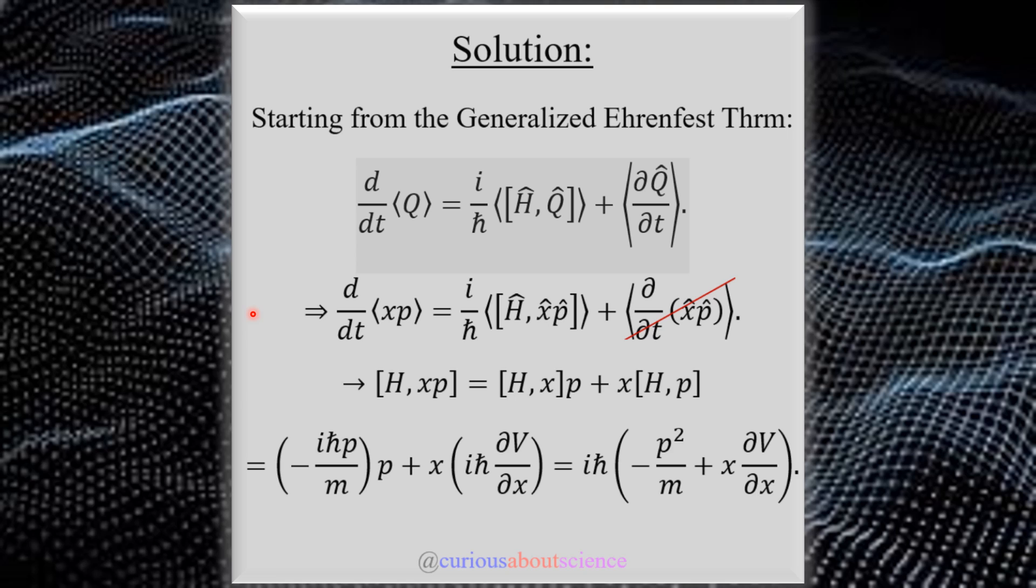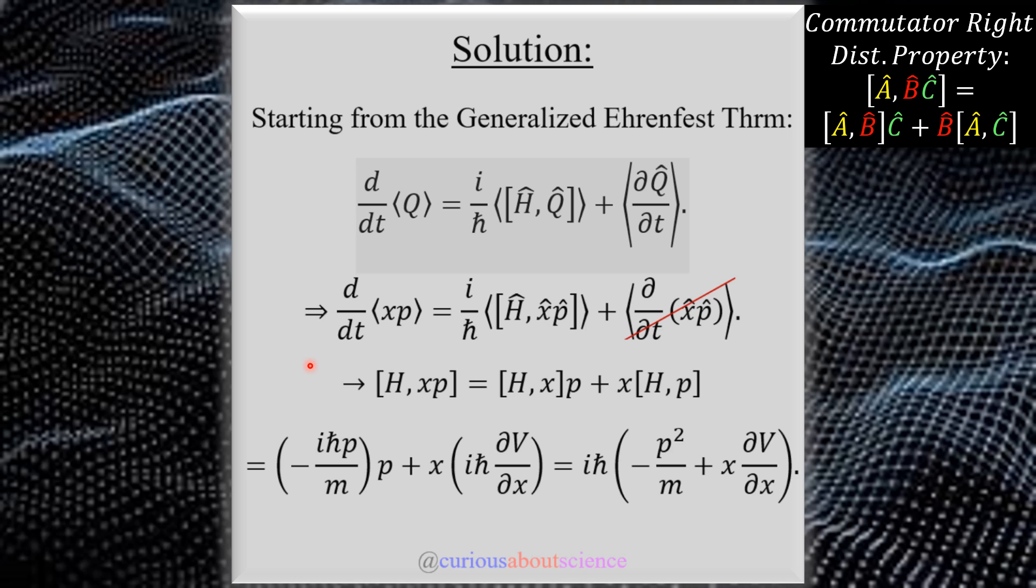Nonetheless though, what we see migrating down is that we still have to evaluate what is this expectation or the expectation of this commutator relation here. And so once we have that, we see that once we plug in x and p, we have to distribute it. So if you recall, the commutator right-hand distribution property, we have this form that we need to match. So we have p on the inside and x on the inside. And now we're just left with two commutators of H and x and H and p, respectively.